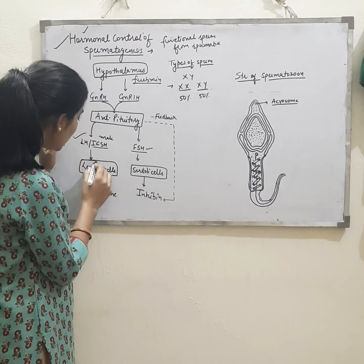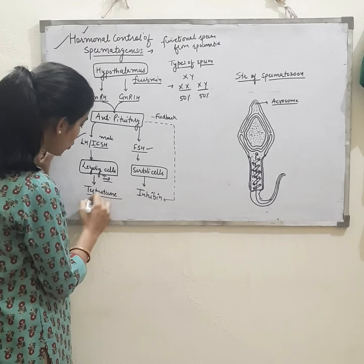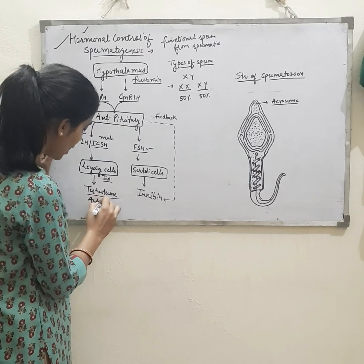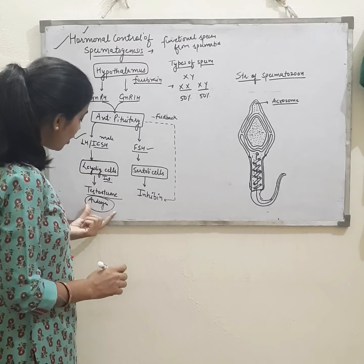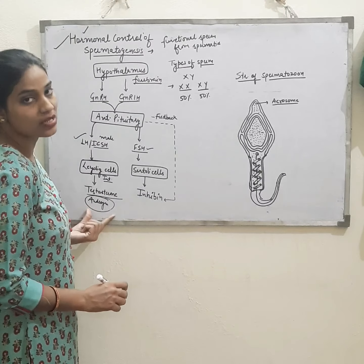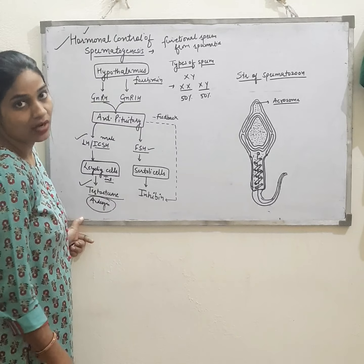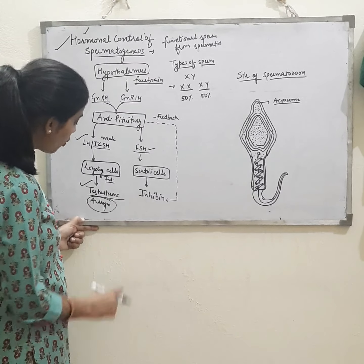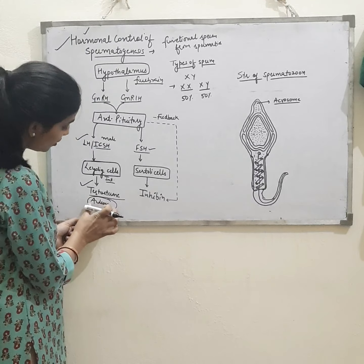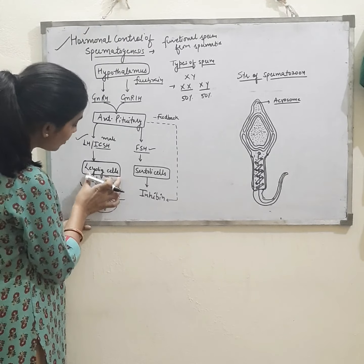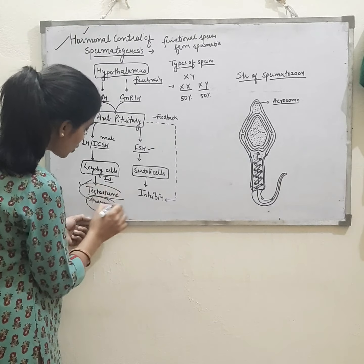The function of the Leydig cells is to help in the secretion of androgens. Androgens are steroid hormones, and under the androgens different hormones are present — one of them is testosterone, another is dihydroepiandrosterone, and many other androgens are present in this category. The Leydig cells help in the secretion of testosterone.